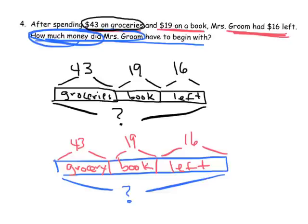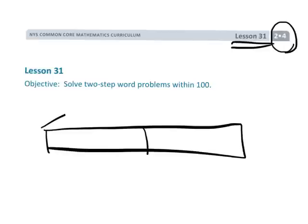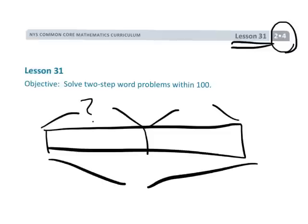And, of course, this problem is just an addition problem. Students are going to have to figure out some way to add $43 plus $19 plus $16. And, that is grade 2, module 4, lesson 31, using those tape diagrams to model word problems.